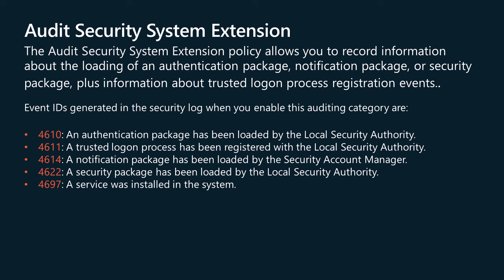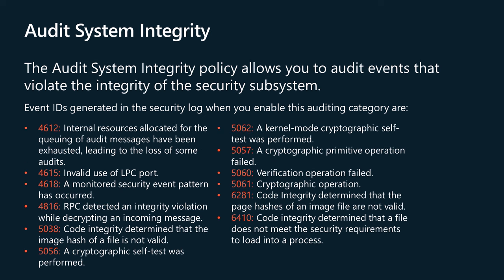The following events will be enabled if you configure auditing through this policy. 4611: an authentication package has been loaded by the local security authority. 4614: a trusted logon process has been registered with the local security authority. 4622: a notification package has been loaded by the security account manager. 4697: a security package has been loaded by the local security authority. 4697: a service was installed in the system.